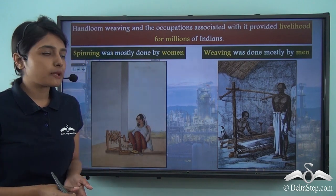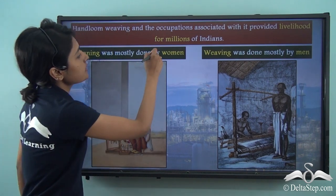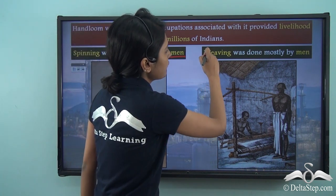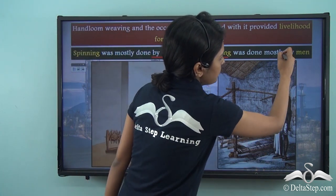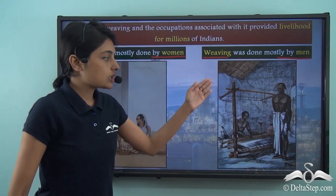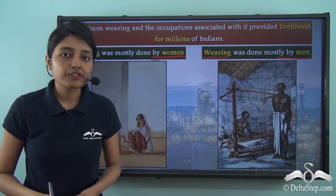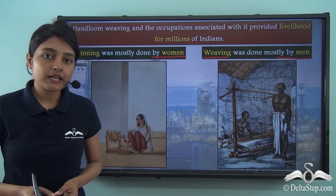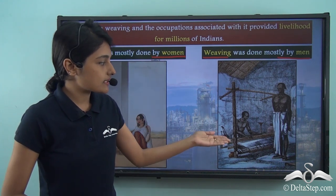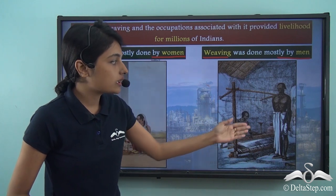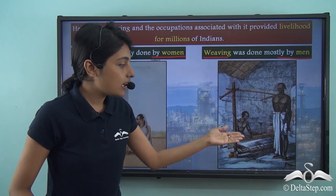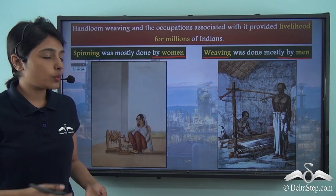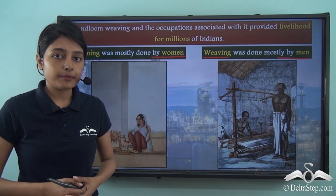It was woven into clothes, and this is how spinning and weaving together help in the production of textiles. Traditionally speaking, spinning was mostly done by women and the work of weaving was undertaken mostly by men. Here you can see a Tanti weaver as he had been painted by the Flemish painter Balthazar Solvins. Here you can see how the Tanti weavers are weaving a piece of textile, while women used to do the traditional work of spinning the fabric.